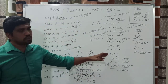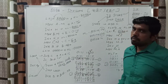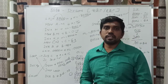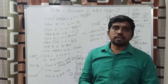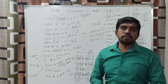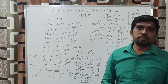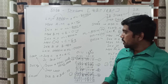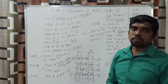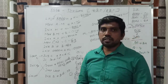Before writing the program, first decide the denominator value and numerator value. The 16-bit numerator value is divided by the 8-bit denominator value. You apply the repeated subtraction process and finally obtain the quotient and remainder result.